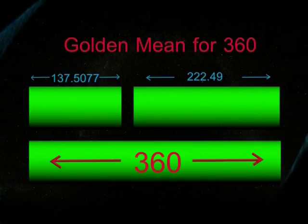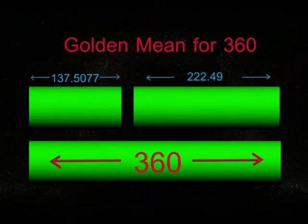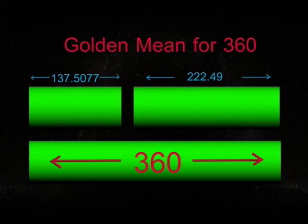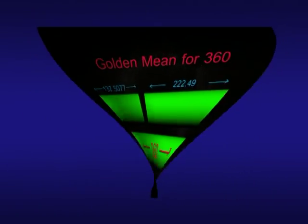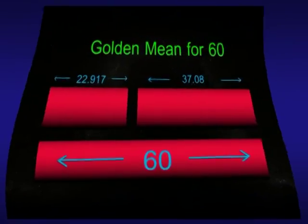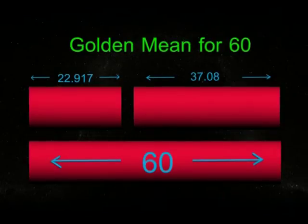Here is another amazing fact. But please go and research the golden ratio. There are many informative sites on the net. The golden ratio or golden mean for 360 is 137.5077 and 222.49. This gives us the golden angle of 137.5 degrees.